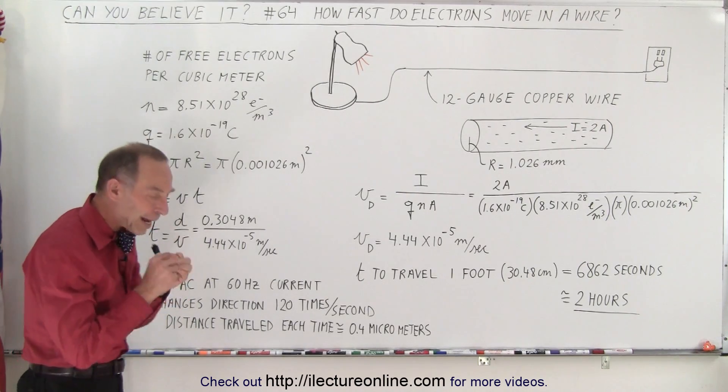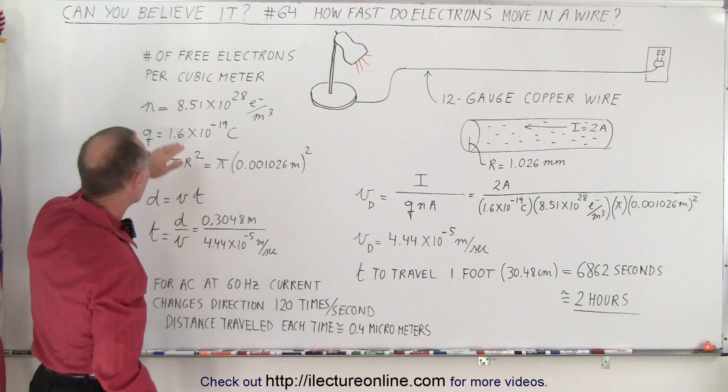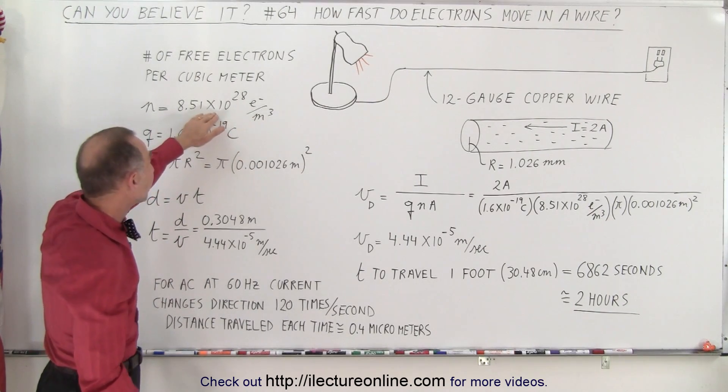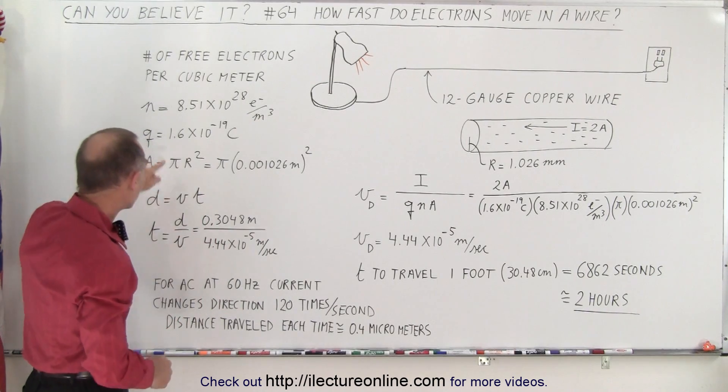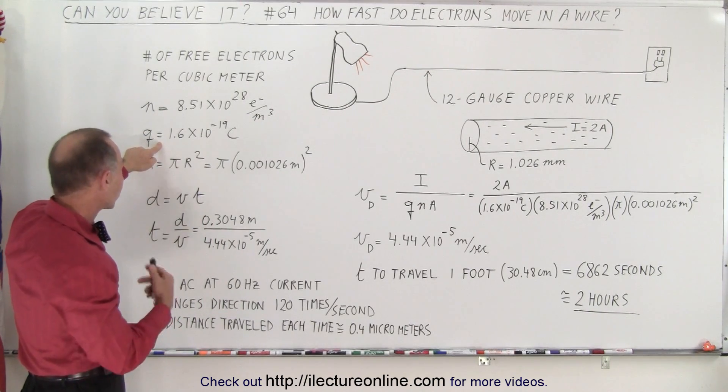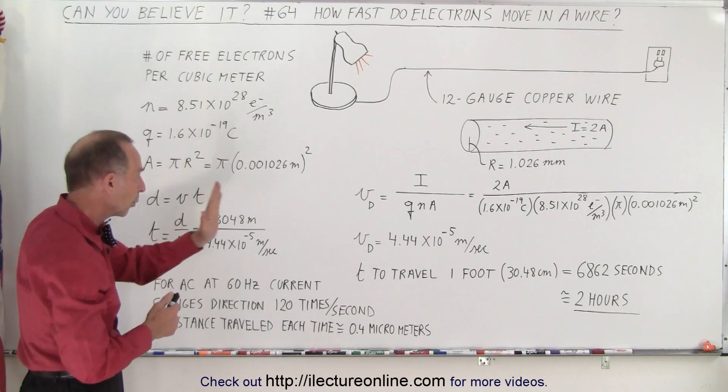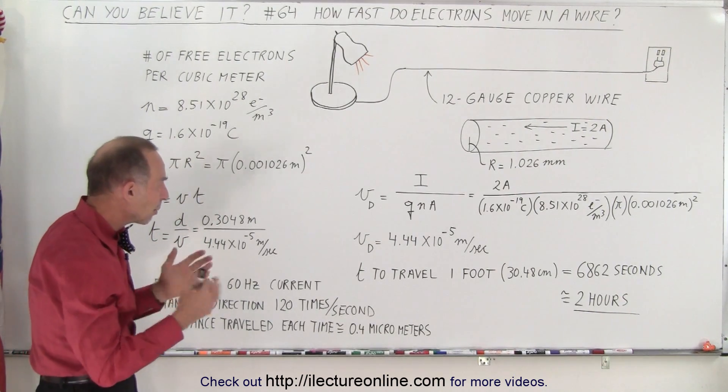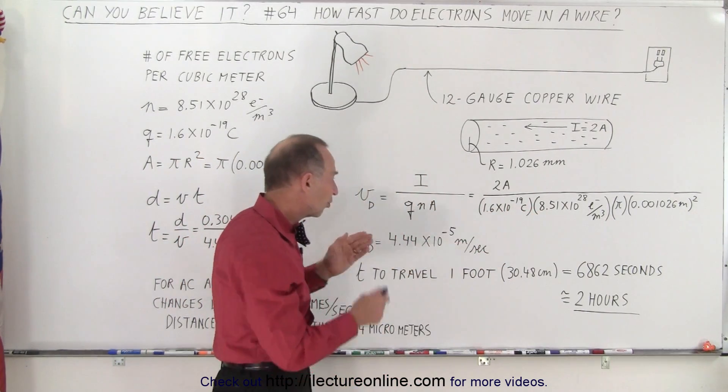It turns out that for each copper atom there's one electron that is free to jump from atom to atom. So per cubic meter of copper there's this many electrons available to travel down the wire. The charge for each electron is the basic charge of an electron, and the cross-sectional area is πr², that would be for the wire.